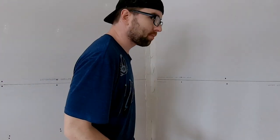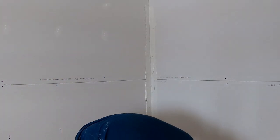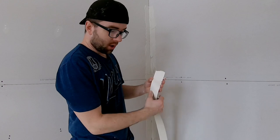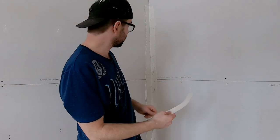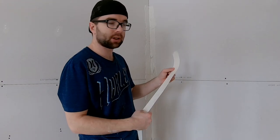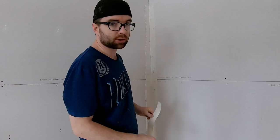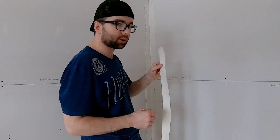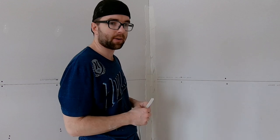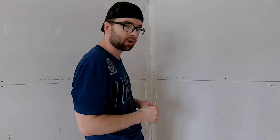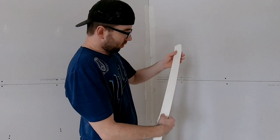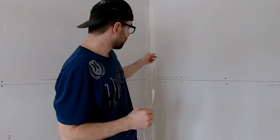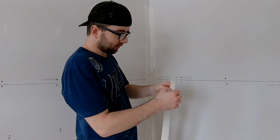Now I'm going to put the tape on. I'm using paper tape. Paper tape is the tape to use for professional drywall finishing or even for a do-it-yourselfer. You want to use paper tape. Never the fiber tape. Fiber tape is just good for patches and that sort of thing. And especially don't use fiber tape on an inside corner. It'll make a real mess.